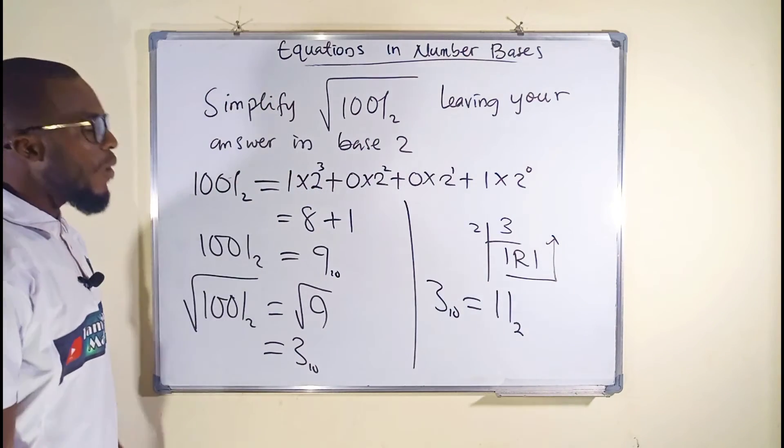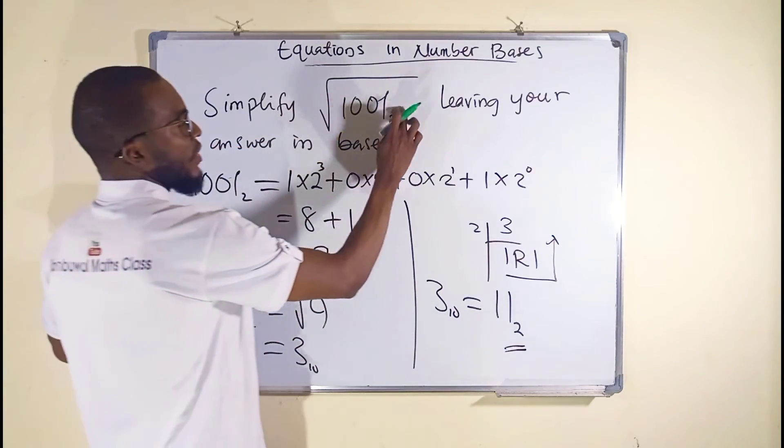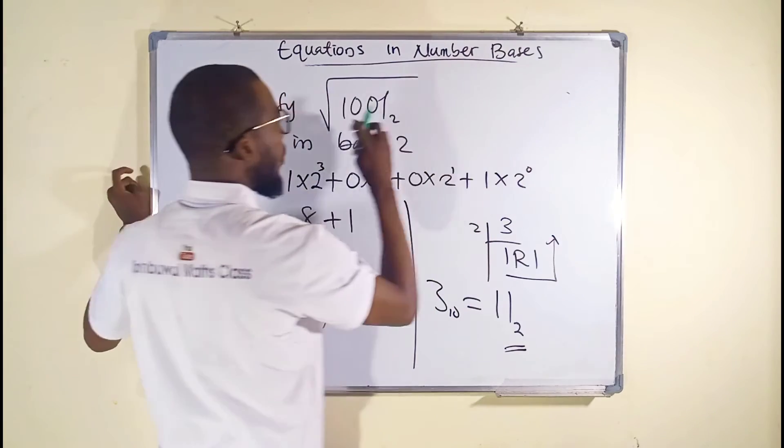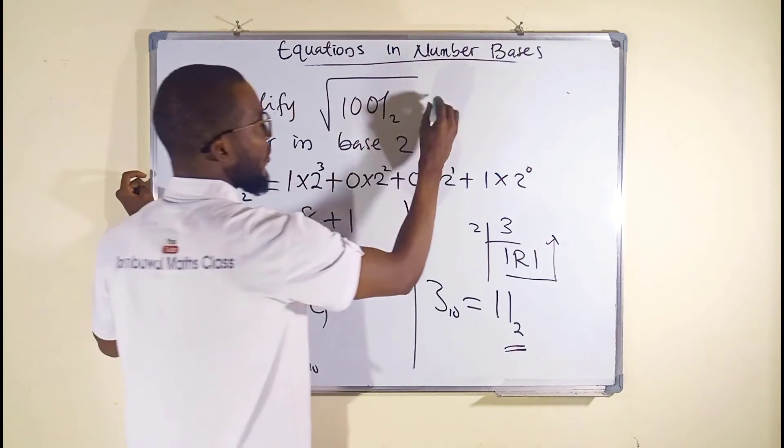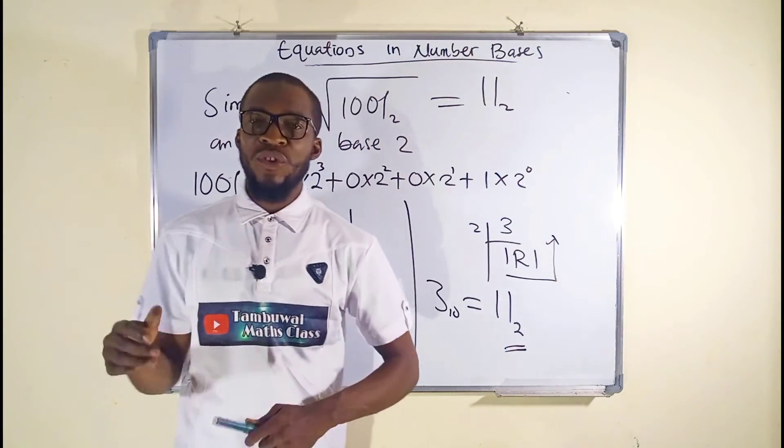So we can say now that the square root of 1001 in base 2 is the same thing as 11 in base 2. And this is all I have for you today.